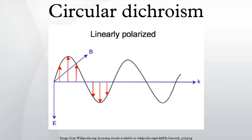For left circularly polarized light with propagation towards the observer, the electric vector rotates counterclockwise. For right circularly polarized light, the electric vector rotates clockwise.